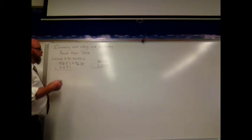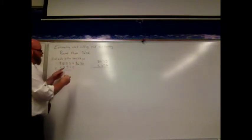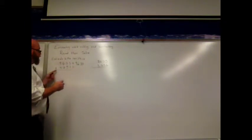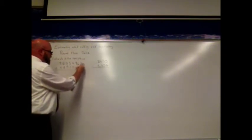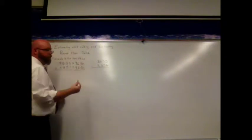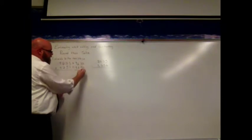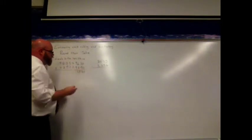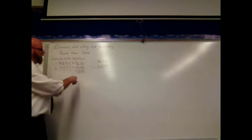For 4,251, when I look at rounding it — is 51 closer to 50 or 60? It's closer to 50, so 4,251 rounds to 4,250. And then I would just add like I normally would: 0 plus 0 is 0, 3 plus 5 is 8, 6 plus 2 is 8, and 4 plus 9 is 13. So my estimated answer is 13,880 when I estimate to the tens place.